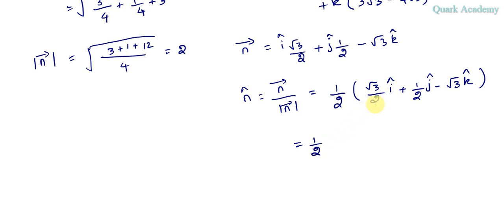So let's do that: 1 by 2, this 2 also I'm taking out, root 3 i cap plus j cap negative. So actually in the third term there is no 2, you have to multiply and divide with 2.